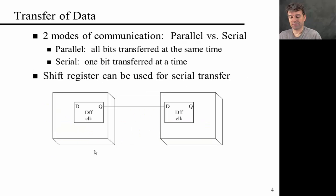Of course there's reasons why these type of registers are interesting. So for example, when you want to do data transfer, there's essentially two modes of communication: parallel and serial communication. When you do parallel communication, basically all bits up to a certain size are transferred at the same time, while in serial, one bit is transferred at a time. And the shift register can be used to realize serial information or data transfer.